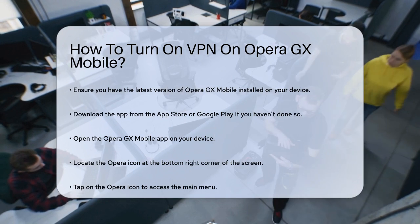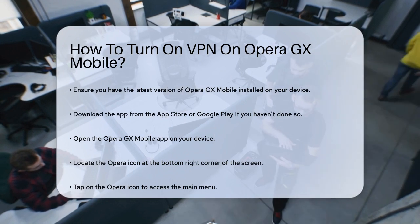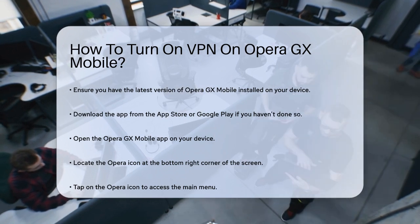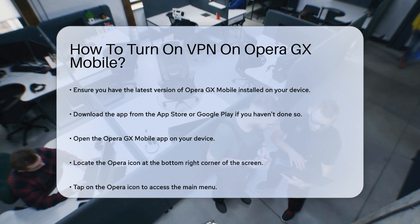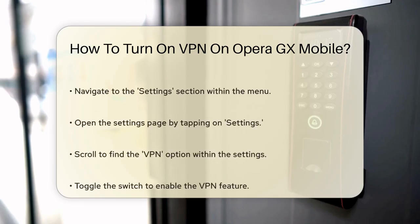Once you have the app, open it and look for the Opera icon at the bottom right corner of the screen. Tap on this icon to access the main menu.